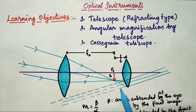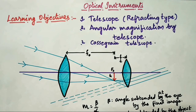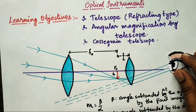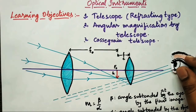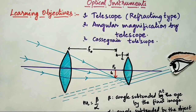If the arrangement is such that the first image falls at the focus of the second lens, the final image is formed at infinity. When we look through the combination of two lenses from the eyepiece, we can see the image formed at infinity through the telescope. So distant objects such as the moon and planets can be seen with the help of this combination.